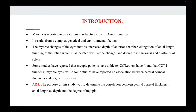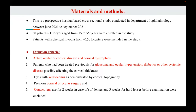Our aim of this study is to determine the correlation between the central corneal thickness, axial length, AC depth and the degree of myopia. Materials and methods: this is a prospective hospital-based cross-sectional study conducted in the Department of Ophthalmology between June 2021 to September 2021. 60 patients were included, 190 eyes — one patient was one-eyed — with age ranging from 15 to 55 years. Patients with spherical myopia were taken from minus 0.5 diopters. The exclusion criteria involved active ocular or corneal disease, corneal dystrophies, patients treated previously for glaucoma and ocular hypertension, diabetics, eyes with keratoconus, previous corneal or ocular surgery, and contact lens use for two weeks for soft lenses and three weeks for hard lenses.